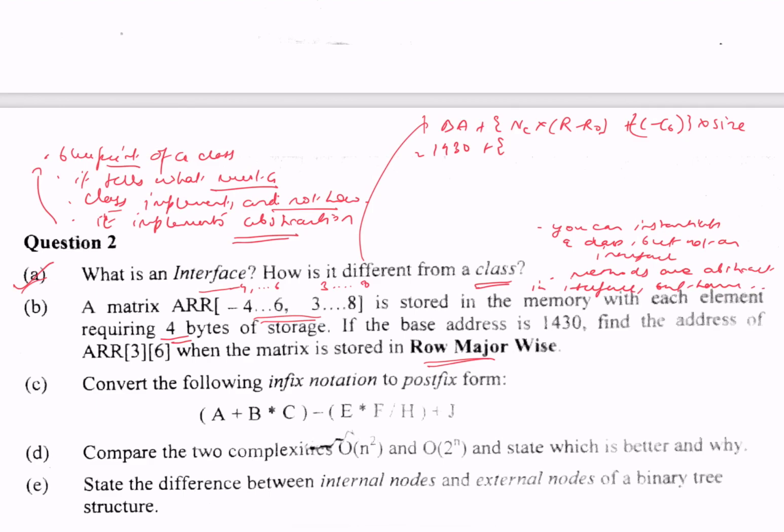If you count 3, 4, 5, 6, 7, 8, there are six columns. So we have 6 into r. r is the location of which we need to find the address, so r here is 3. r₀ is the starting point where the base address is given, so starting point r₀ is -4.